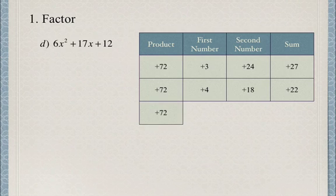We skip 5 because it doesn't divide evenly into 72. Then 6 times 12 equals 72, and 6 + 12 = 18, which is still too high.